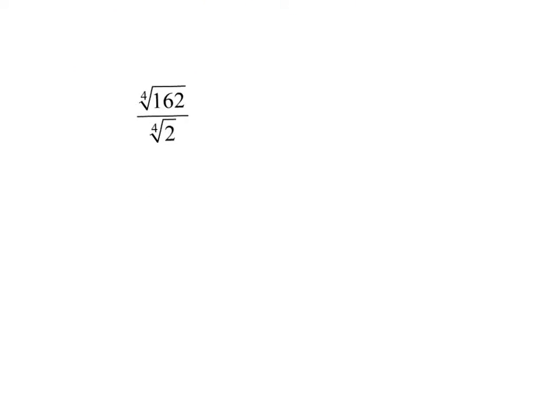On this one, I want to put them together again, because they're the same root, so I can actually make it one fraction, which is good, because now I can take the fourth root of 162 divided by 2 would be 81, and the fourth root of 81 is 3. I suppose we should do plus or minus, since it's an even number here in the root. And that's it. So we're just simplifying using the exponent rules we already know. Now we're just working with fractions.